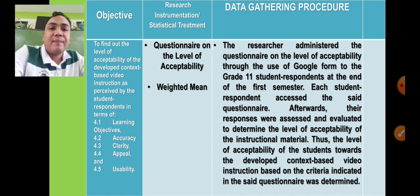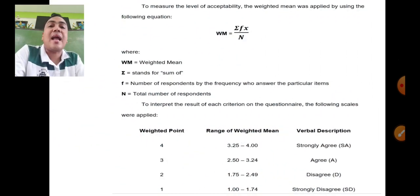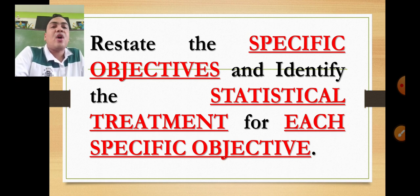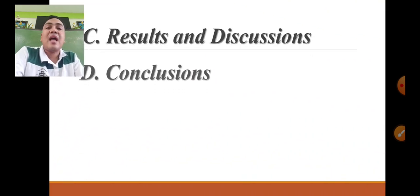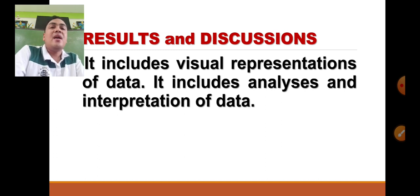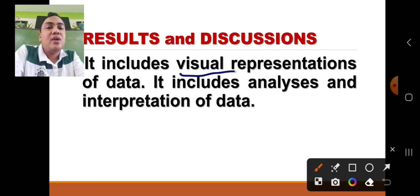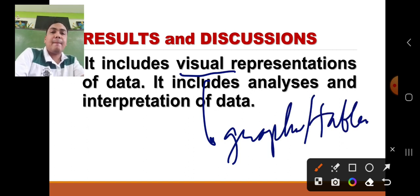Finally, we have the last three parts of your action research: results and discussion, conclusion, and recommendation. Under results and discussion, it includes visual representations of data — graphs and tables — and analysis and interpretation of data expressed in paragraph form. The communication will be effective and efficient if presented through graphs and tables.